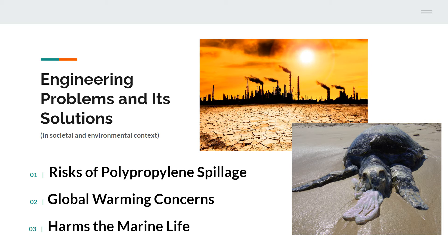The risk of polypropylene spillage is very dangerous to the environment. The second problem is about global warming concerns, and the third one is about harm to marine life. These are the obvious and main problems that we need to deal with.